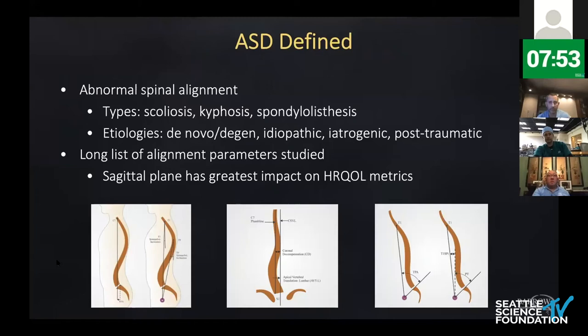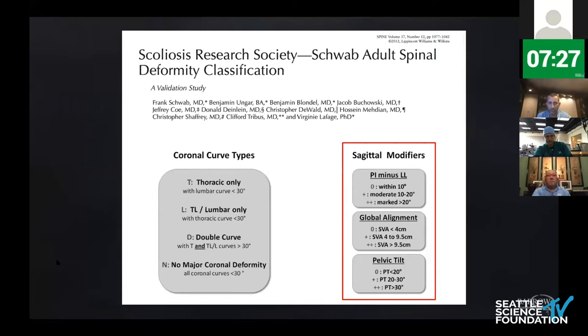ASD is a broad diagnosis that includes a lot of different entities. There's been a long list of alignment parameters studied over the years, and the one common theme is that the sagittal plane is really the key and has the greatest impact on patient-reported outcomes and health-related quality of life metrics. In 2012, Schwab and colleagues, in collaboration with SRS, introduced the SRS-Schwab classification system, which added the sagittal modifiers — the big three sagittal modifiers — that we all use and know today to define our deformities.